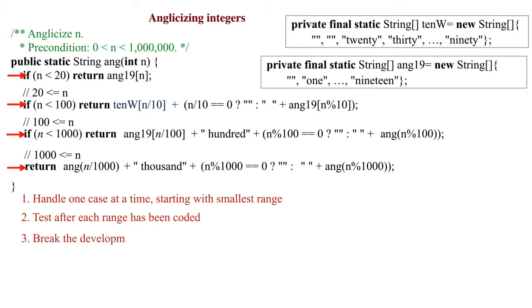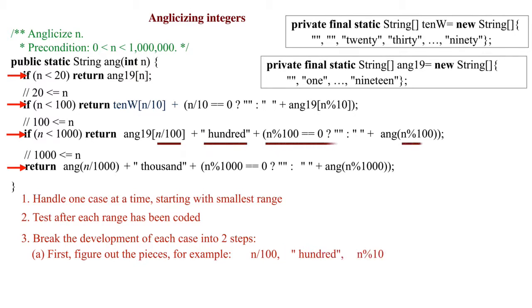Breaking the development of each case into two steps: First, figure out the pieces. For example, n div 100, hundred, and the conditional expression to code n remainder 100. Second, figure out how to anglicize each piece. Here, use array ang19 for n div 100 and function ang for n remainder 100.